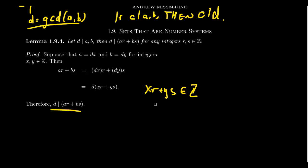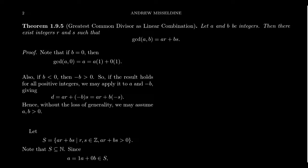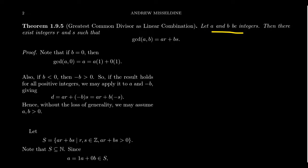We're going to use this fact all the time in this video and in the future, so this is one you'll want to remember. Now we're going to prove that the greatest common divisor of two integers can be written as a linear combination of the integers themselves. If A and B are integers, then there exist integers R and S such that AR plus BS equals the greatest common divisor of A and B. This is essentially what we mean by the Euclidean algorithm.